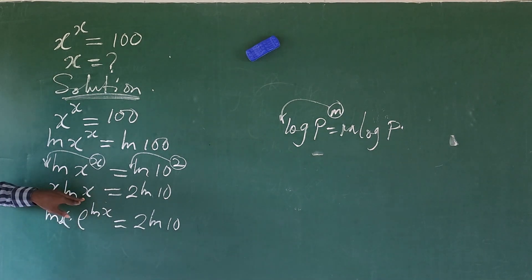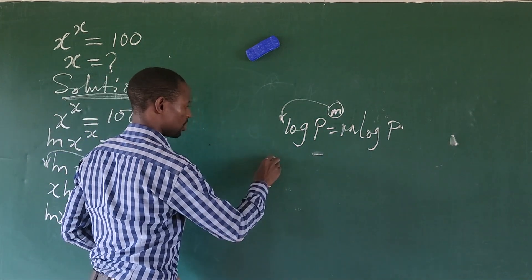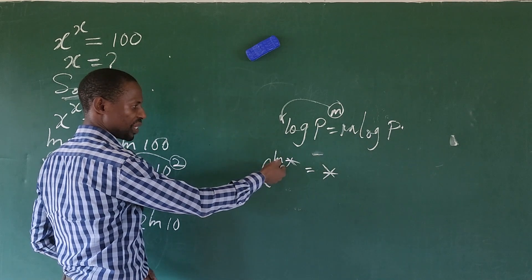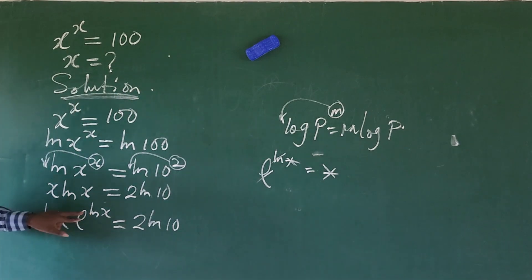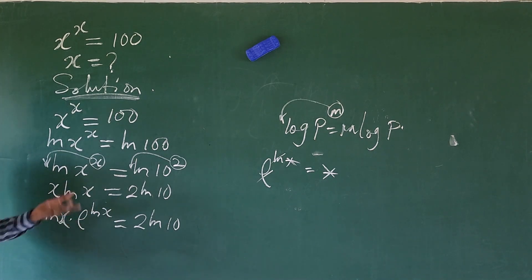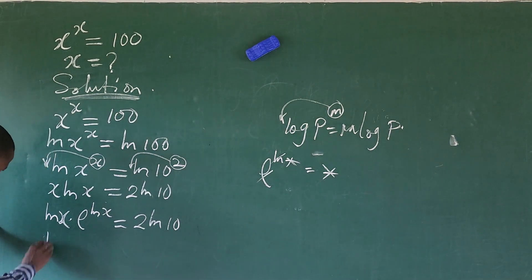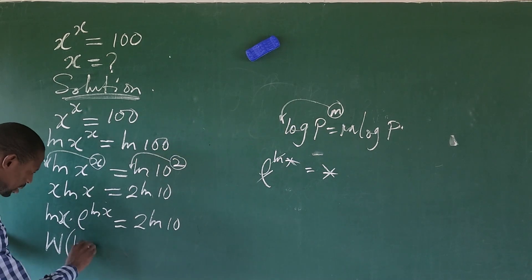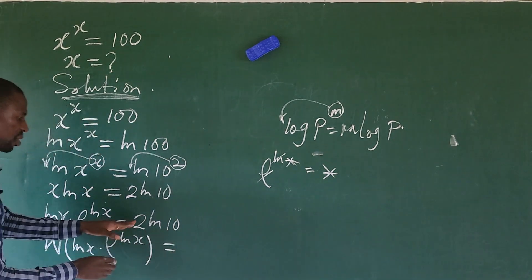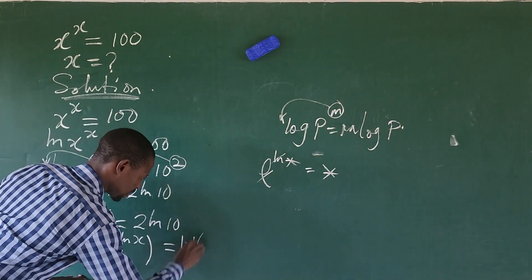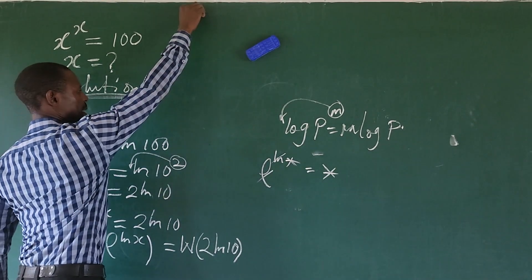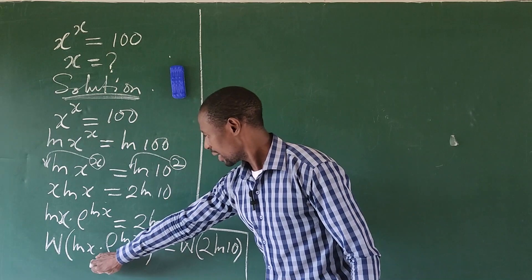If you look at this expression, everything in here follows the form: remember, e to the power of LN of a equals a — the exponential and the natural log cancel. So what we have now has the same base quantity and exponent quantity. We can now bring in the Lambert W function: W of LN of x times e to the power of LN of x equals W of 2 LN of 10.